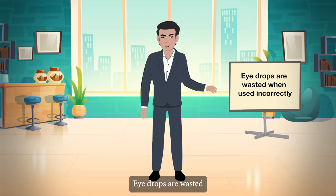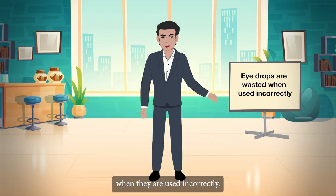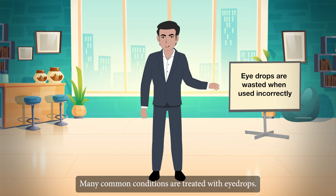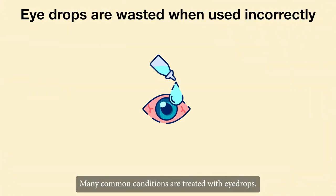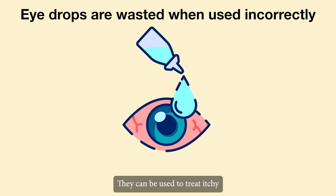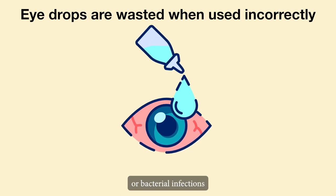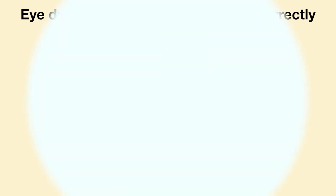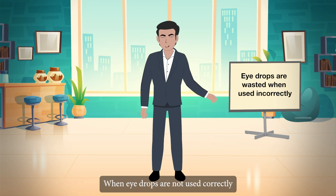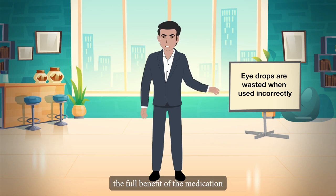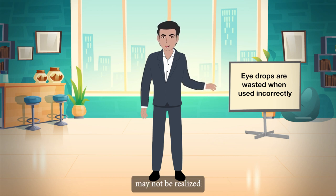Eye drops are wasted when they are used incorrectly. Many common conditions are treated with eye drops — they can be used to treat itchy or tired eyes caused by allergies, viral or bacterial infections, and other conditions such as glaucoma. When eye drops are not used correctly, the full benefit of the medication may not be realized.